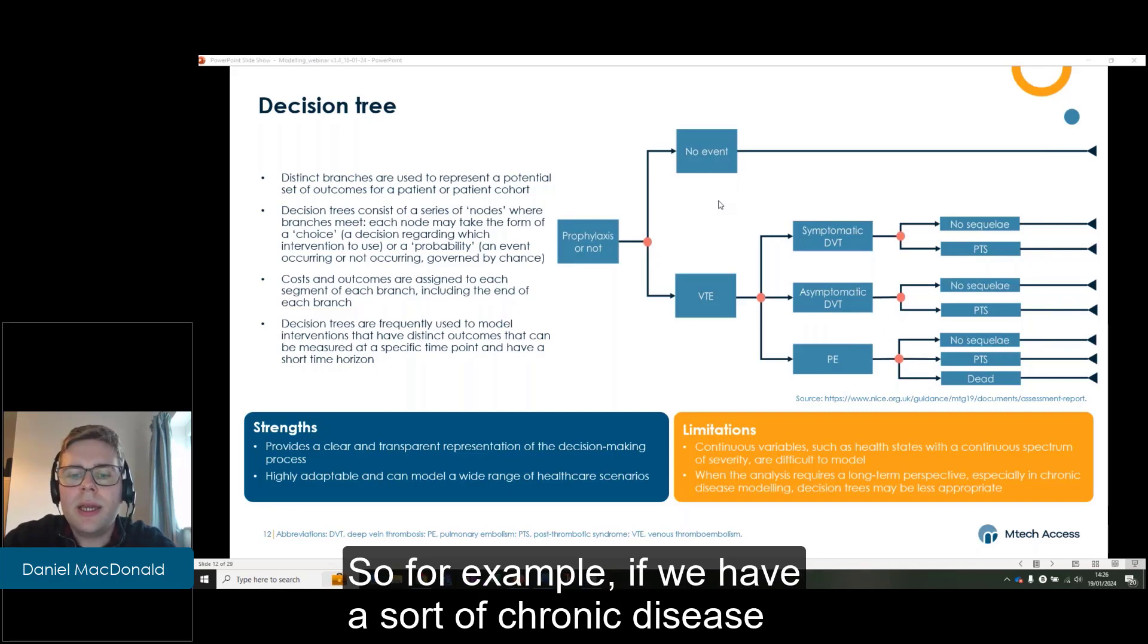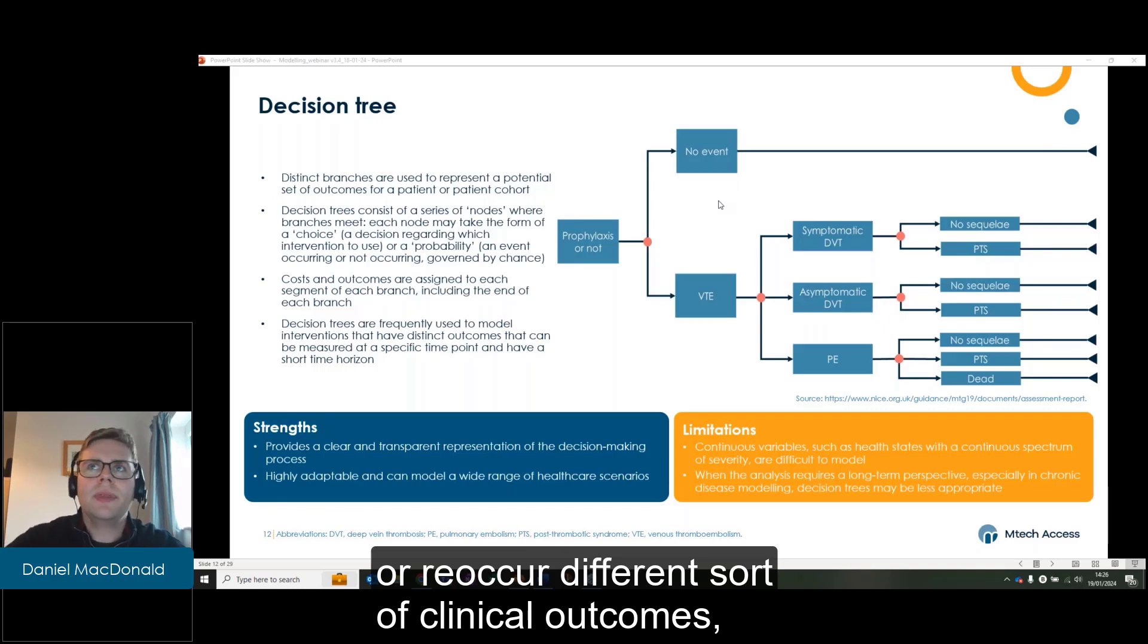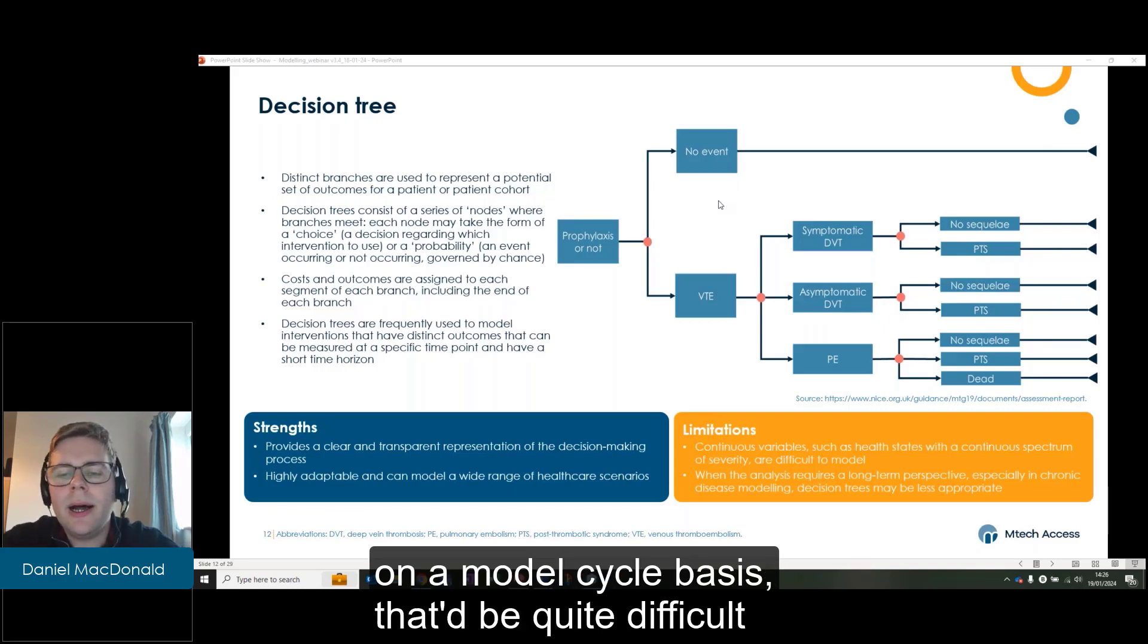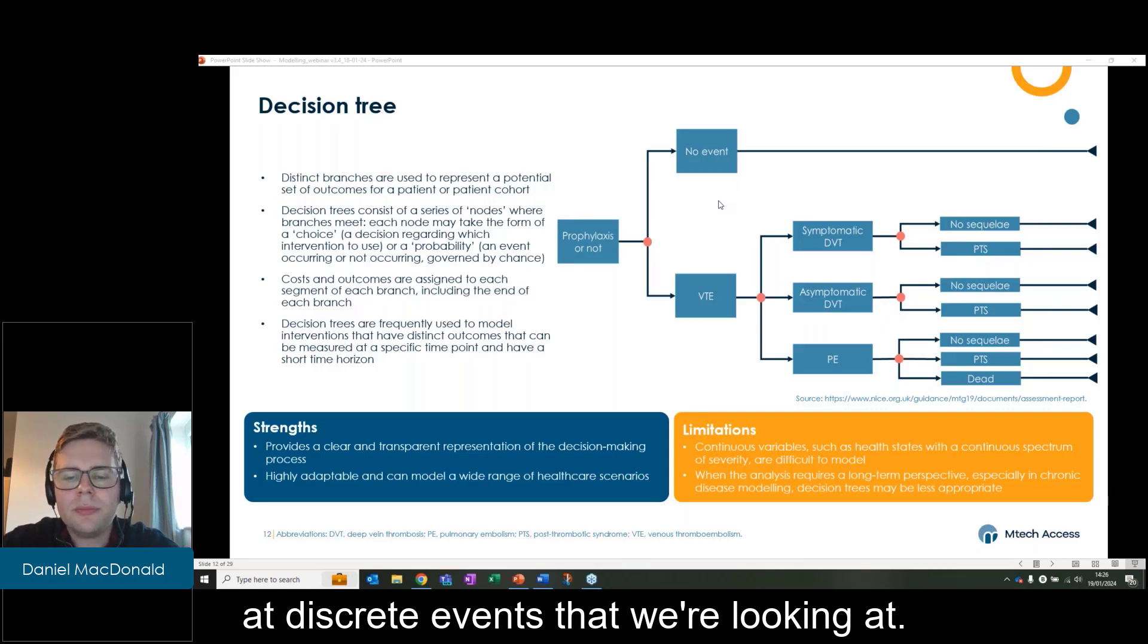For example, if we have a chronic disease that we're looking at, patients that occur or reoccur different clinical outcomes on a model cycle basis, that'd be quite difficult because the decision tree only specifically looks at discrete events that we're looking at. So modeling long-term is difficult.